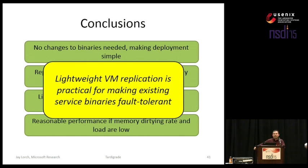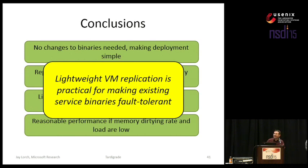Question (Jacob): Assuming Remus is a good idea — couldn't you have just taken a really small Linux kernel and put the FDS service in there, stripped down Linux to not run a bunch of external processes, and then replicated that? Answer: For instance, the buffer cache is a component of Linux that you don't have to replicate but would be inside a VM — it is external to our lightweight VM, which is one reason our approach is preferable.